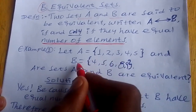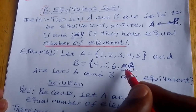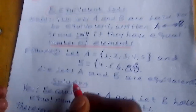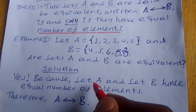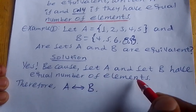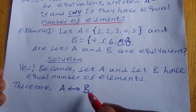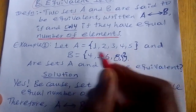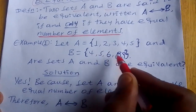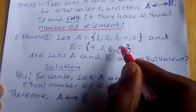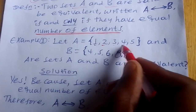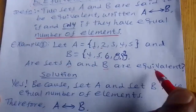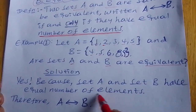Example one: Let set A equal to {1, 2, 3, 4, 5} and set B equal to {4, 5, 6, 8, 9}. Are sets A and B equivalent? Solution: Yes, because set A and set B have equal number of elements. Therefore, A is equivalent to B.